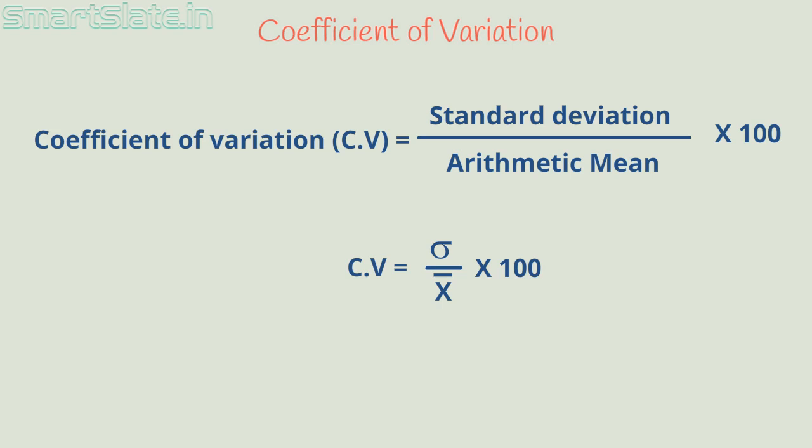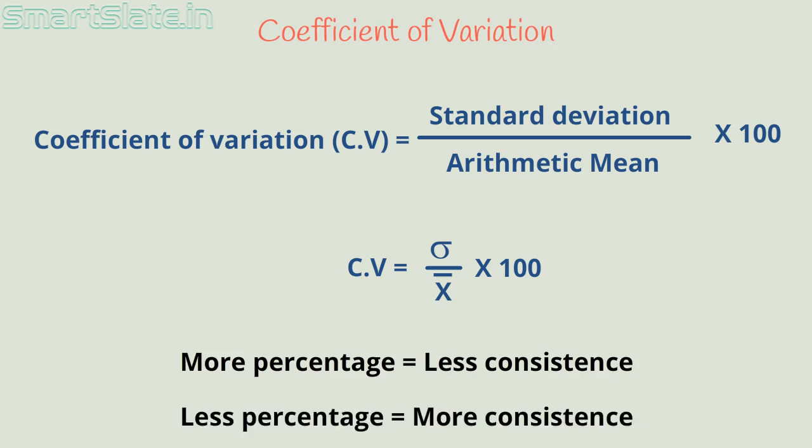As I told you, coefficient of variation determines the consistency. More the percentage, less consistent the given data is. Less the value of CV, more the consistency.